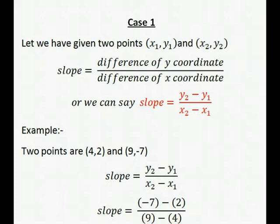Let's see an example to understand it better. We have given two points (4, 2) and (9, -7). So we can use the slope formula to find the slope.